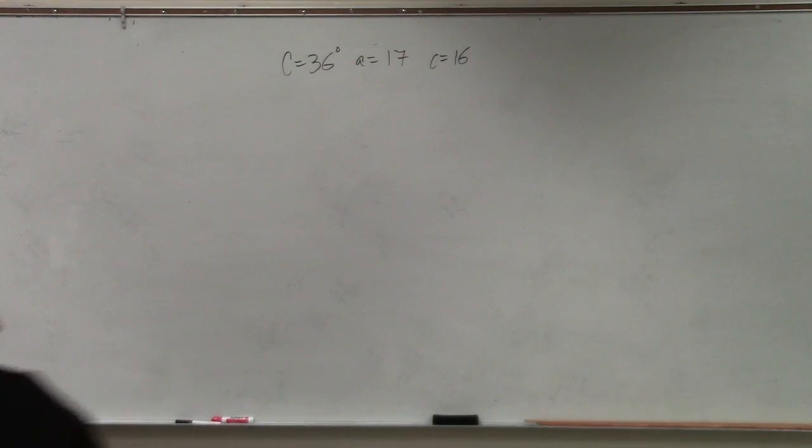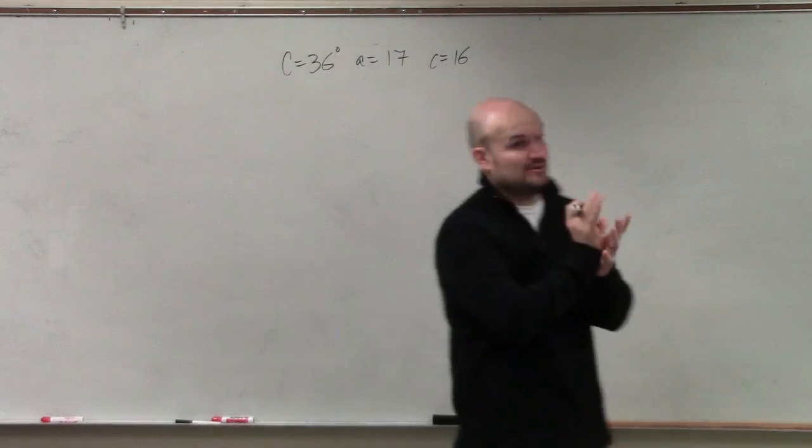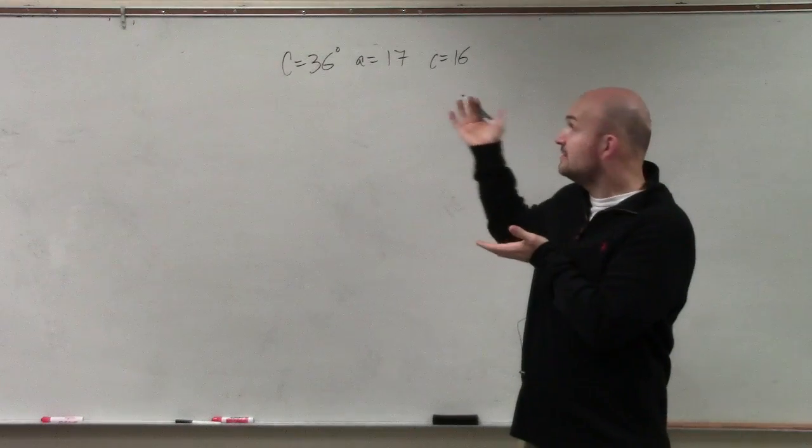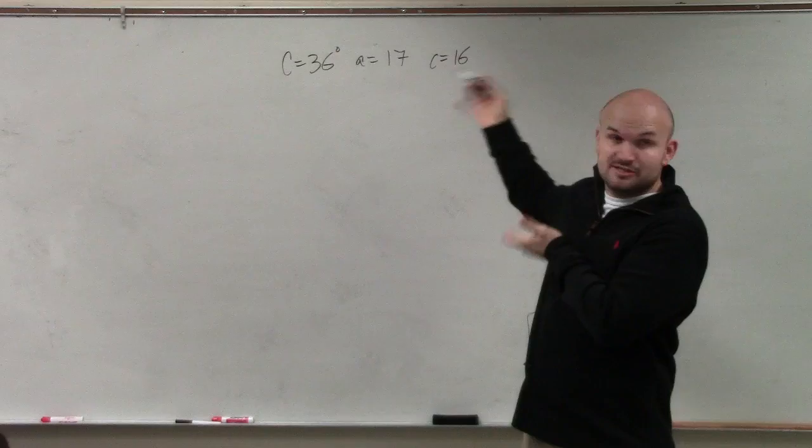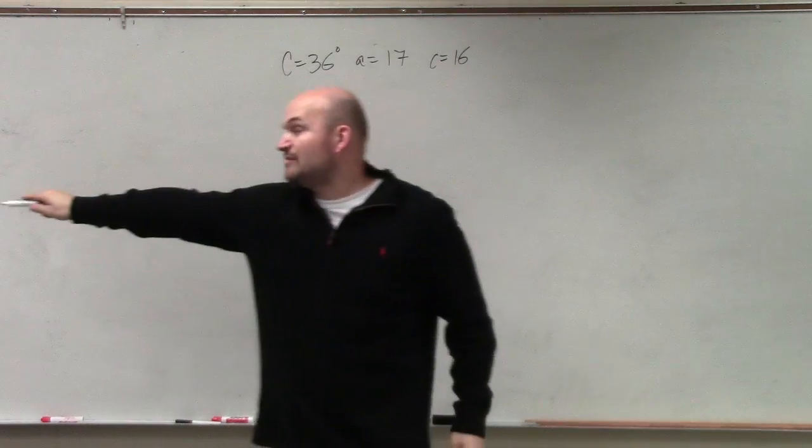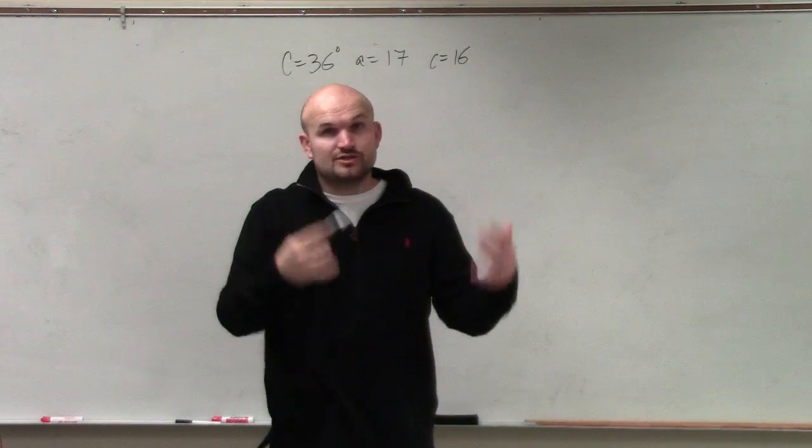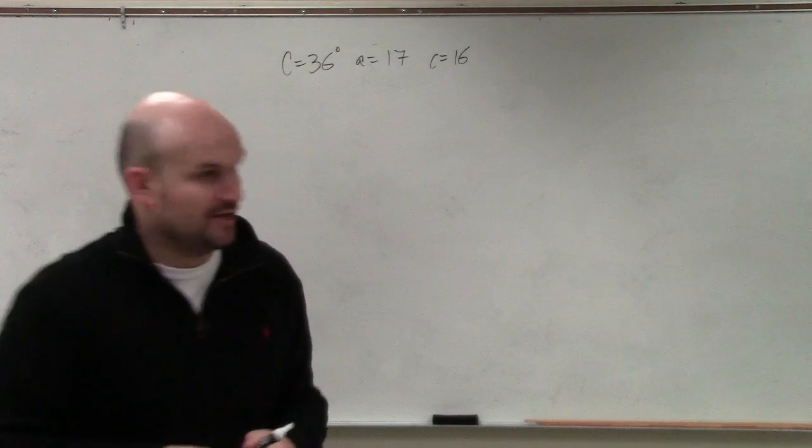So in this case, ladies and gentlemen, what we want to do is they're asking us to identify if we have an ambiguous case. Do you guys automatically notice that we have an angle and two sides, right? Lower case are sides, upper case is an angle. So whenever we have two sides and an angle, we have the ambiguous case. It's one, two, or no triangles.